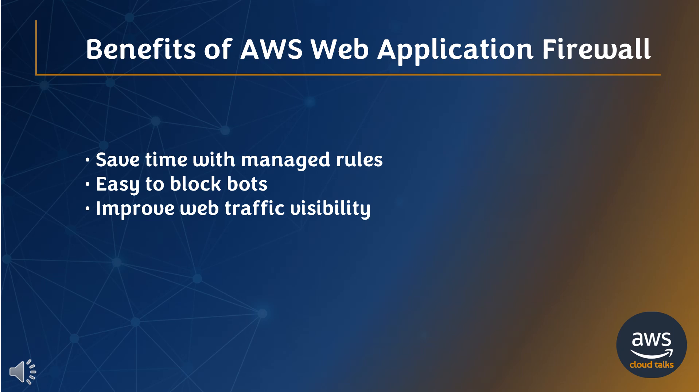AWS Web Application Firewall offers the following benefits for an organization: save time with managed rules, easy to block bots, and improve web traffic visibility. You can save time with managed rules so you can spend more time building applications. You can more easily monitor, block, or rate limit common and pervasive bots. You can improve web traffic visibility with granular control over how metrics are emitted.